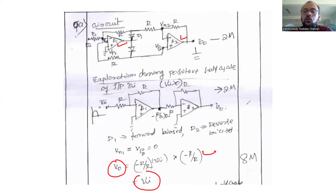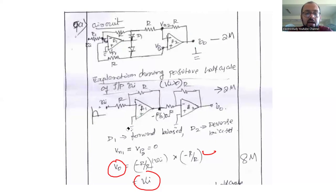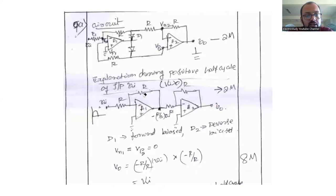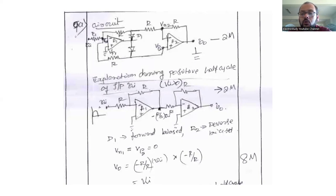Ultimately, you should be able to draw the waveform of a full wave rectifier. Also mention the difference between the conventional rectifier and the precision rectifier. Explain conditions during the positive half cycle and the negative half cycle. D1 will be forward biased and D2 will be reverse biased during the positive half cycle; during the negative half cycle, that will be reversed. Kindly draw this circuit diagram very neatly.